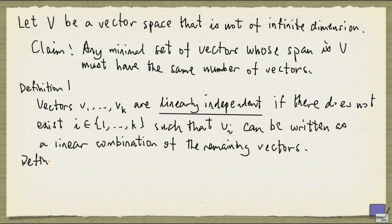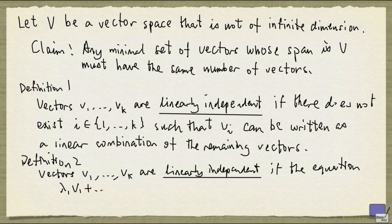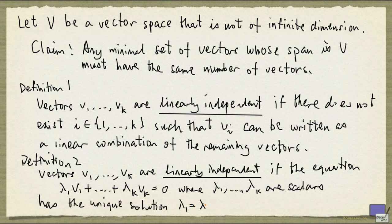And the second way to define it is as follows: vectors V1 up to Vk are linearly independent if the equation lambda 1 times V1 plus ... plus lambda k times Vk equal to the zero vector, where these lambdas are scalars, has the unique solution lambda 1 equals lambda 2 equals ... equals lambda k equals 0. We'll prove that these two definitions are equivalent in a separate video.